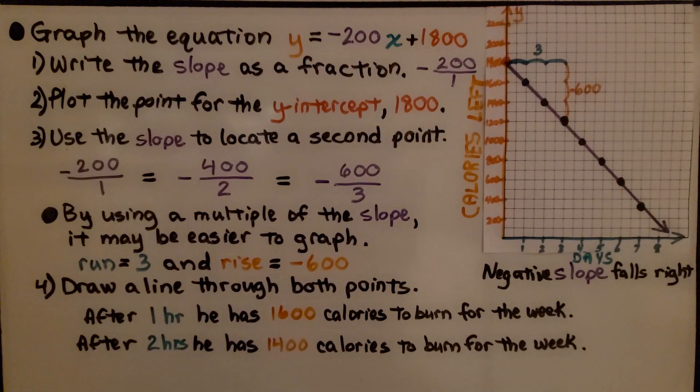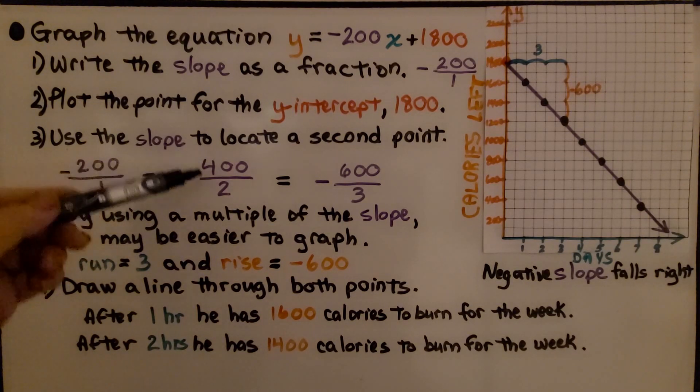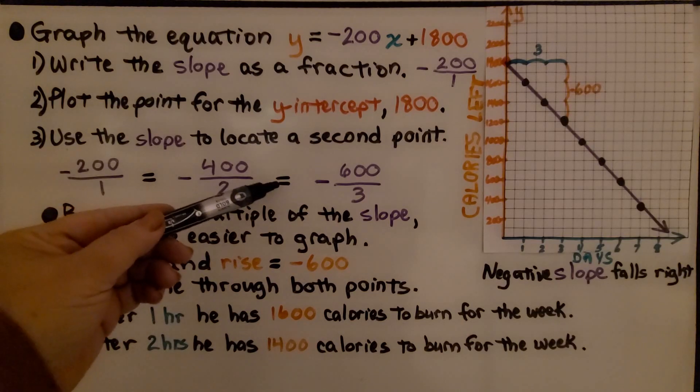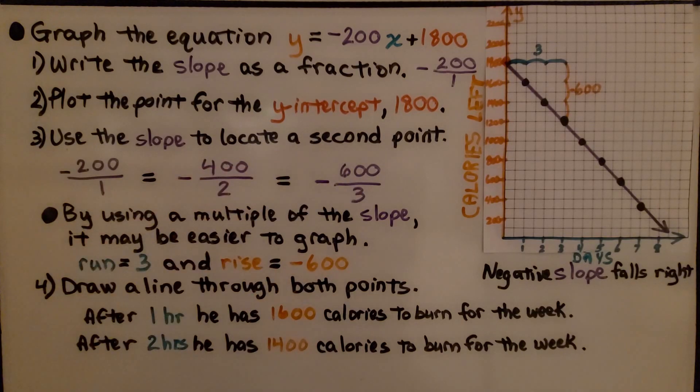Now we use the slope to locate a second point. We have -200 over 1, which equals -400 over 2, which also equals -600 over 3. By using a multiple of the slope, it may be easier to graph. Instead of having a run of just 1, we can have a run of 3. Our run is 3 and our rise is -600.